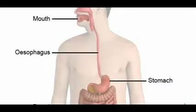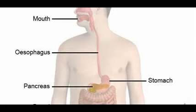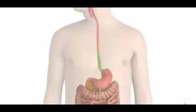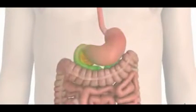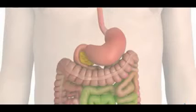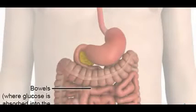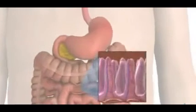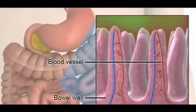Diabetes is a condition where your body is unable to regulate the amount of sugar or glucose in your blood properly. Glucose is absorbed from food and drink during digestion. Once food has been broken down, the glucose passes into your bloodstream through blood vessels in your bowel wall.